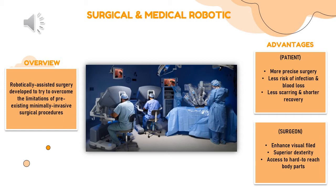What are the advantages for both patients and surgeons using surgical and medical robots? First, for patients, it results in more precise surgeries. Often surgeons need to operate near healthy and sensitive organs, but using robotic systems they focus only on the affected area, aiming to remove the abnormality without affecting the surrounding healthy structure. Because of the small size and flexibility of the robotic instruments, the surgery is easier to accomplish.